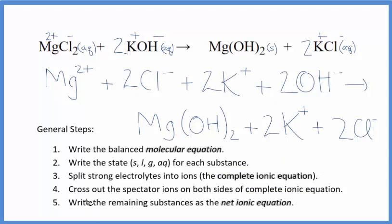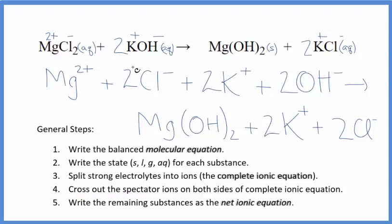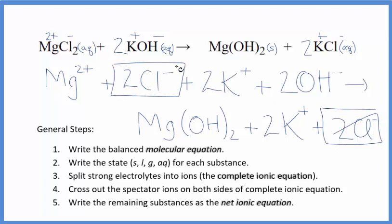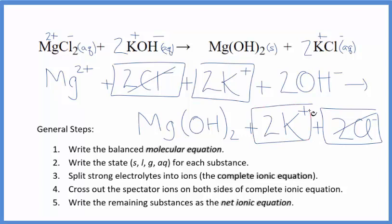This is the complete or total ionic equation. At this point, we can cross out spectator ions — they're on both sides of the complete ionic equation and haven't changed, so we're not interested in them. I see 2 chloride ions in the reactants and in the products — cross those out. Then 2 potassium ions in the reactants and 2 potassium ions in the products — cross those out.